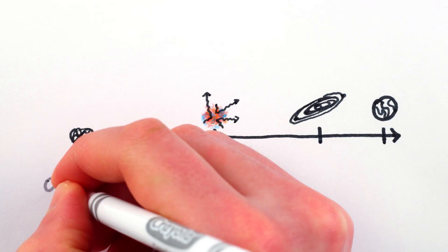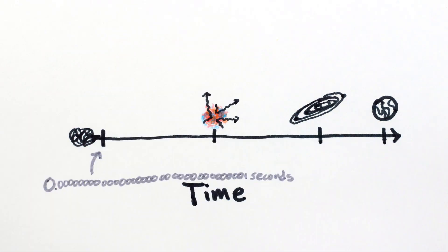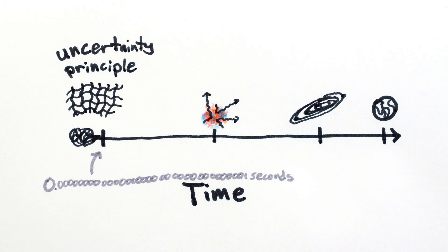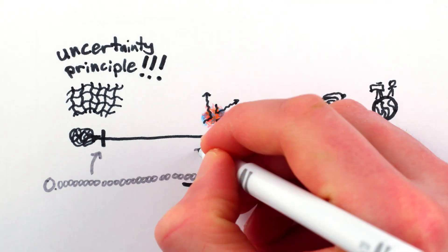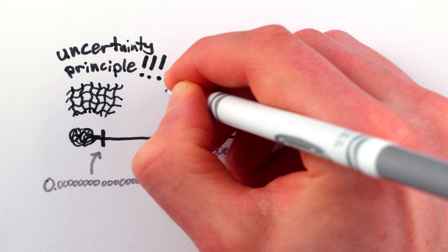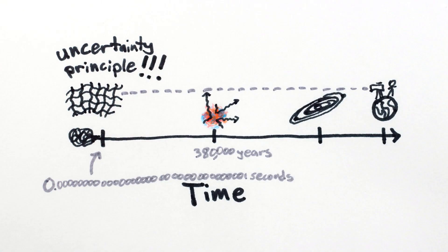They were created just fractions of fractions of a second into the life of the universe, by quantum fluctuations of the gravitational field. So not only does their discovery mark the first confirmation that gravity is indeed a quantum mechanical phenomenon, but it also opens the door for us to look 380,000 years farther back than ever before, into the very birth of our cosmos.